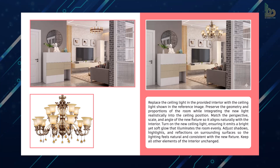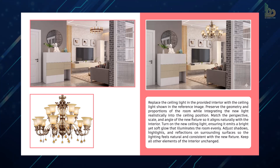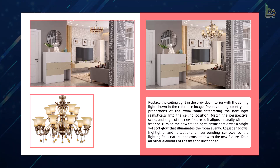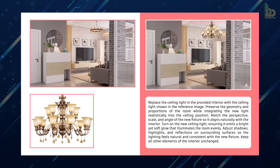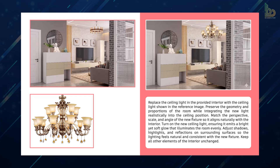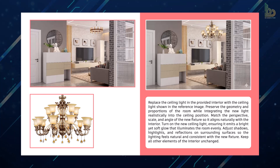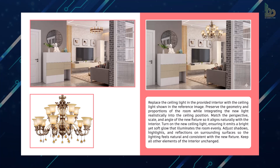Another powerful feature of Nano Banana is the ability to replace objects seamlessly. For example, replacing a ceiling lamp with a new fixture is effortless — the original lamp is removed cleanly and the new fixture is integrated perfectly, complete with accurate shadows. You can even see how the light interacts naturally within the space, creating a warm, cozy atmosphere. This level of precision ensures that every detail feels realistic and enhances the overall mood of the room.